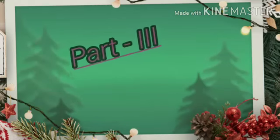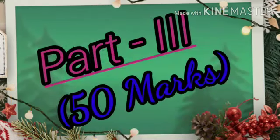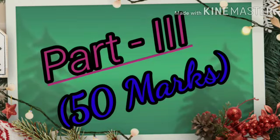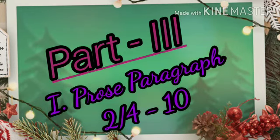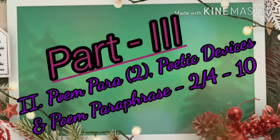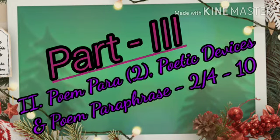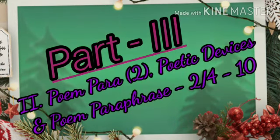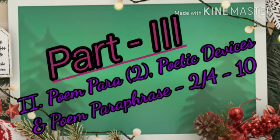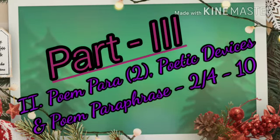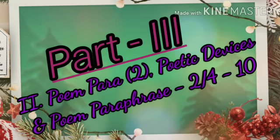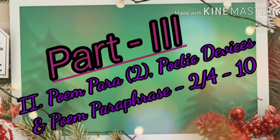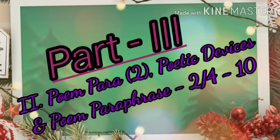Part 3 is 50 marks total, all in the 5-mark category. Section 1: Prose paragraph, 4 out of 2, 10 marks. Section 2: Poem paragraph — poetic devices including rhyming words, rhyming scheme, alliterated words, and figures of speech — plus poem paraphrase where they give one stanza and you explain it. 4 out of 2, totalling 10 marks.